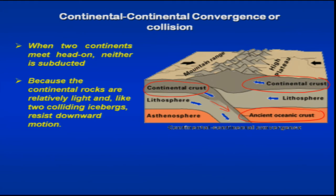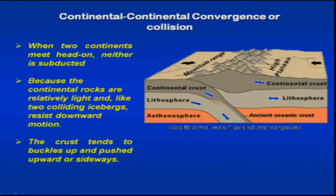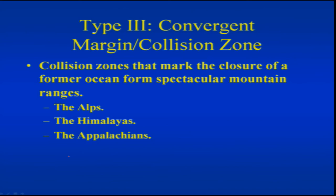Continental rocks are relatively lighter, so like two icebergs colliding they resist downward motion — neither wants to go down because of their density. This collision resulted in the crumpling of rocks and the rising up of mountain ranges — the buckled-up material forms mega mountain chains like the Himalayas. These collision zones mark the closure of the former ocean that was in front of them. In terms of the Himalayas, the Tethys Sea closed down slowly and finally what we see is the formation of the Himalaya.